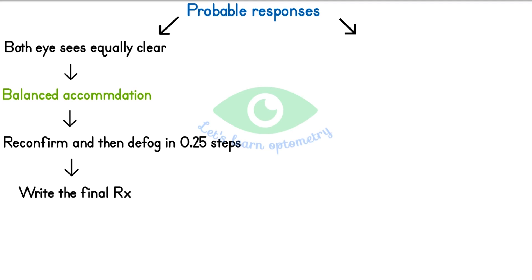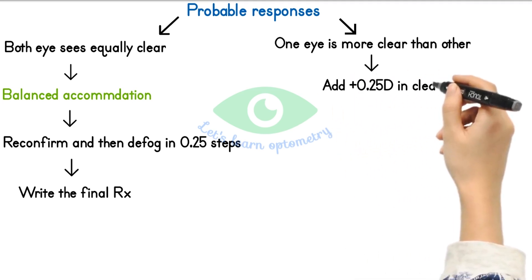Another response for that question would be, one eye sees it more clear than the other. Here for an example, we will consider that the patient is saying left eye is more clear than the right eye. So we have to add 0.25 diopter in front of the clearer eye.